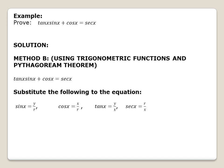There are four trigonometric functions involved: sin x = y/r, cos x = x/r, tan x = y/x, and sec x = r/x. We substitute all of these into the equation. The left-hand side becomes (y/x)(y/r) + x/r, and the right-hand side is r/x. Simplifying, we get y²/(xr) + x/r.